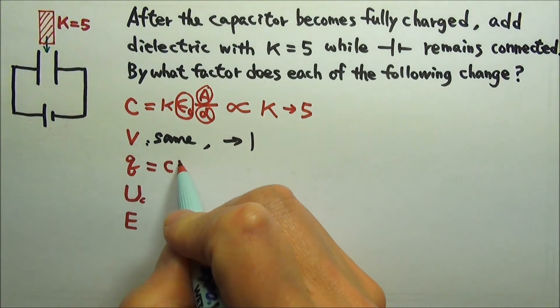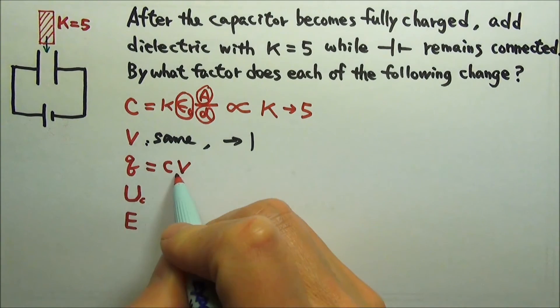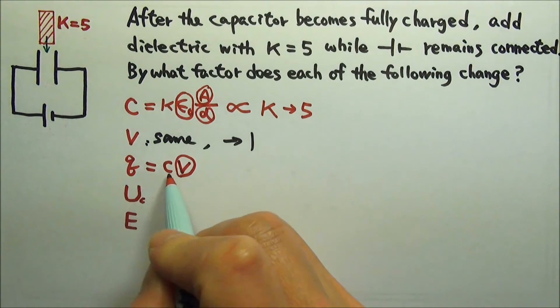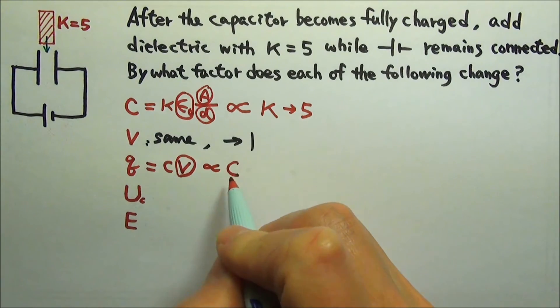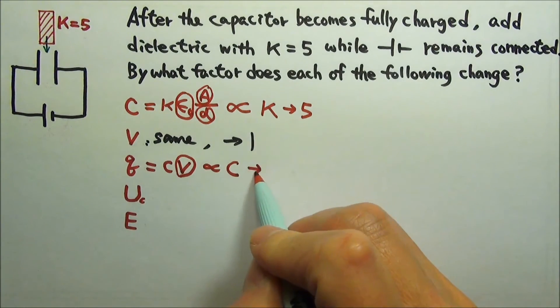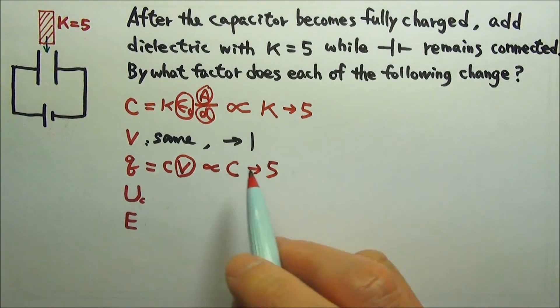Q equals CV. The voltage stays the same, so the charge is proportional to the capacitance, and the capacitance changes by a factor of 5. So the charge on the plates changes by the same factor 5.